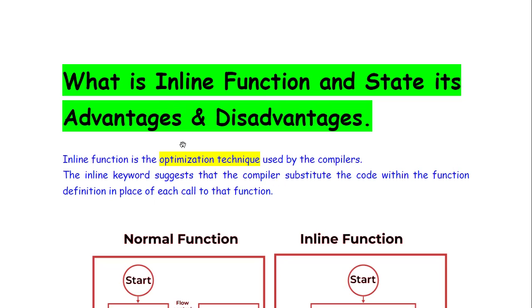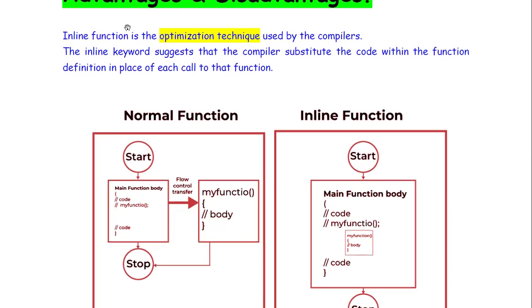Then what are the differences between inline function and macros. Basically inline function is one optimization technique which is used by the compilers and for that we have to put the inline keyword.